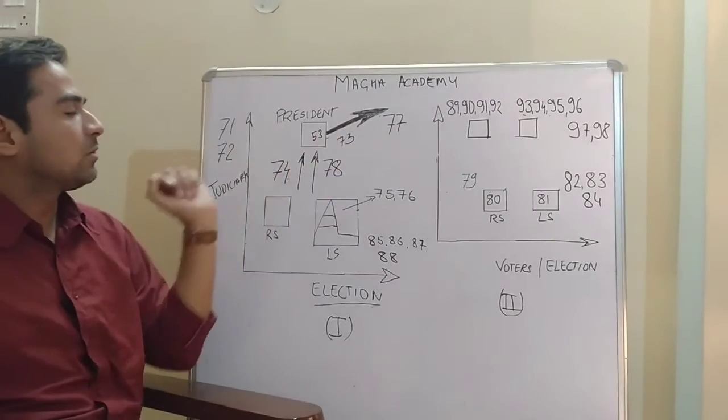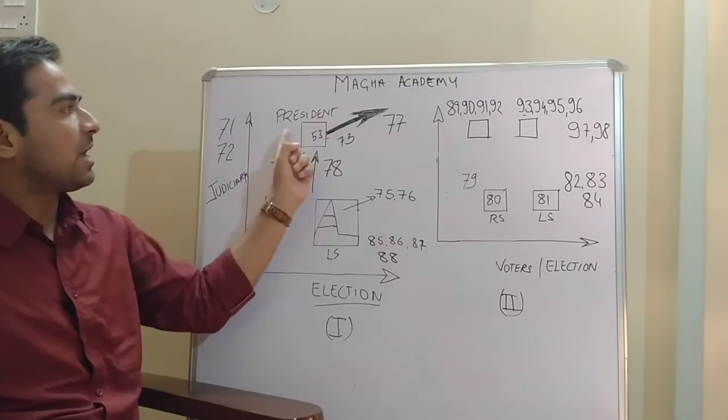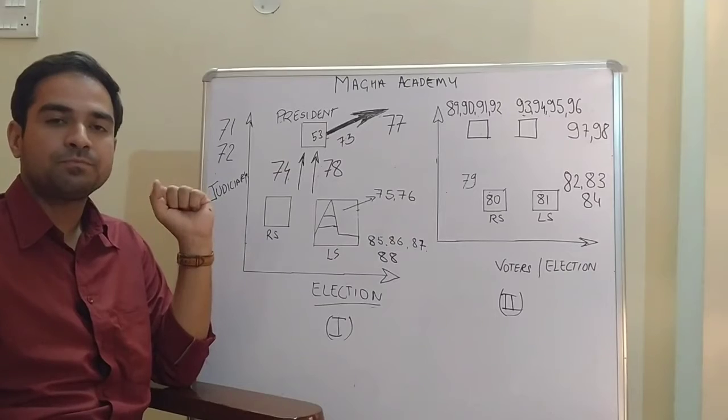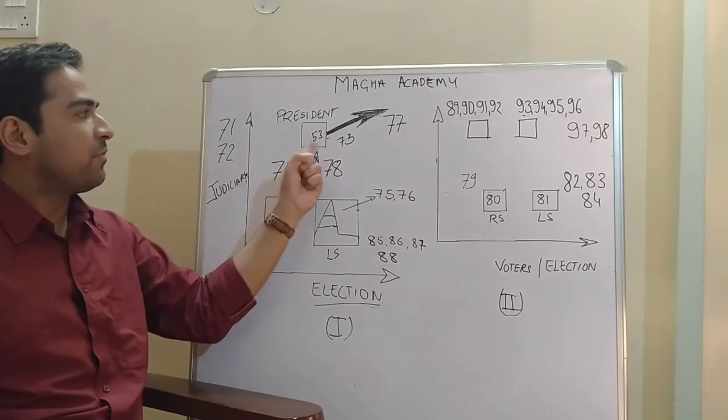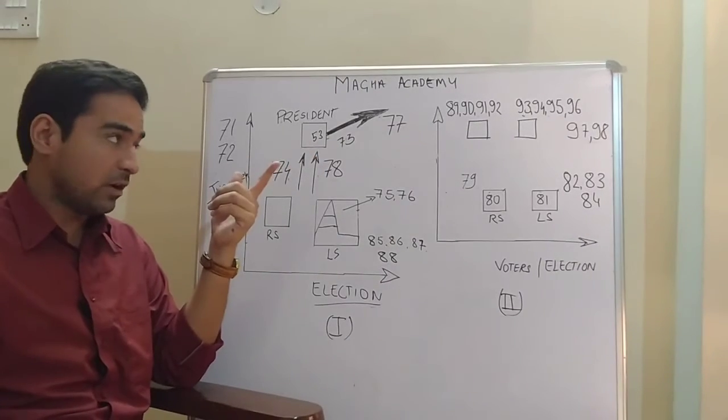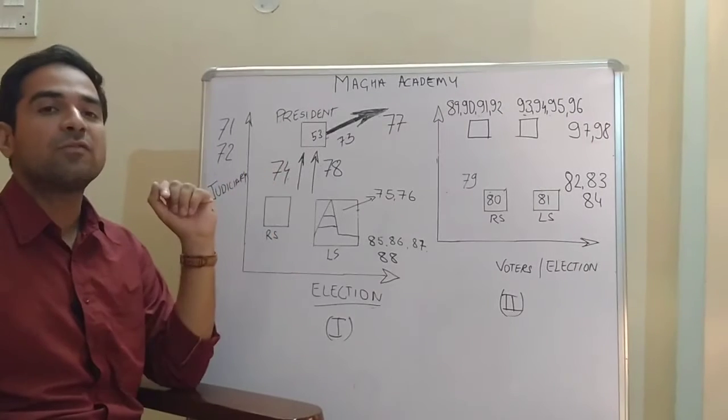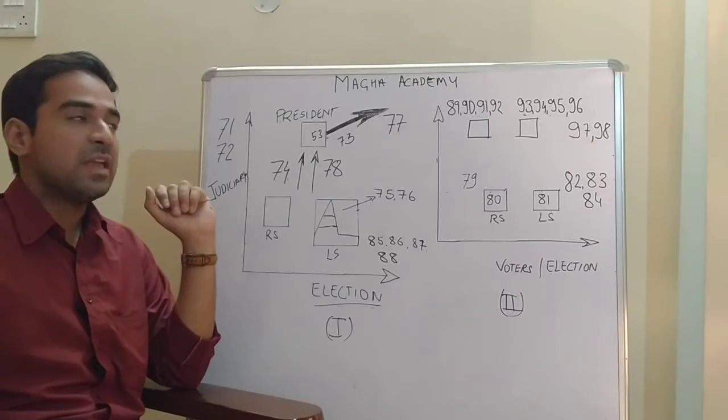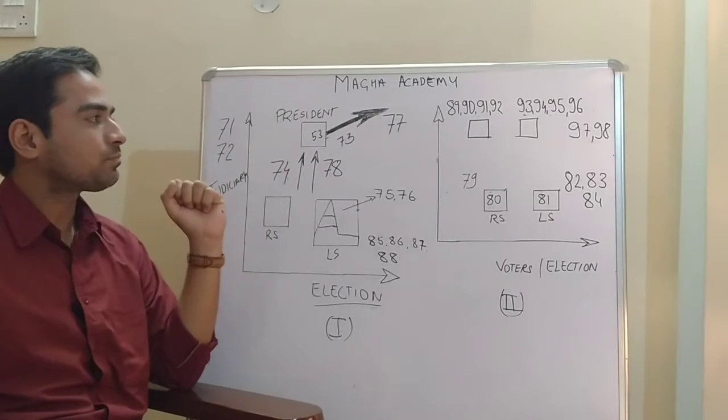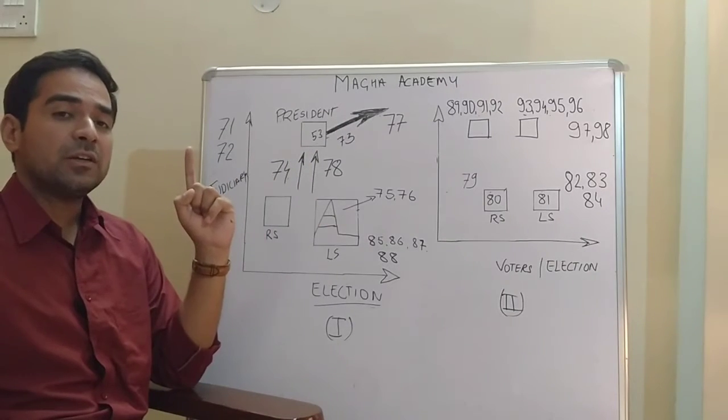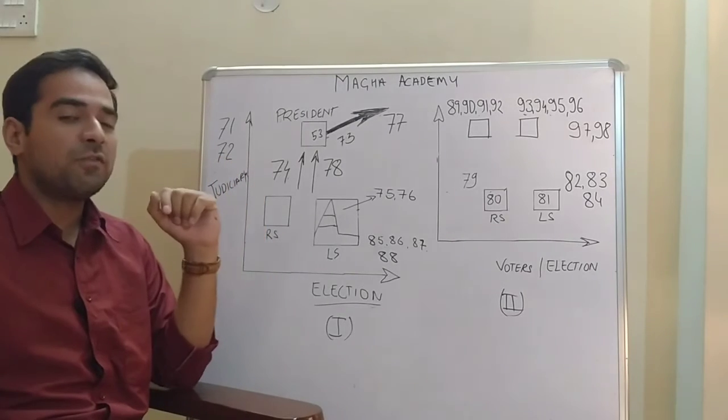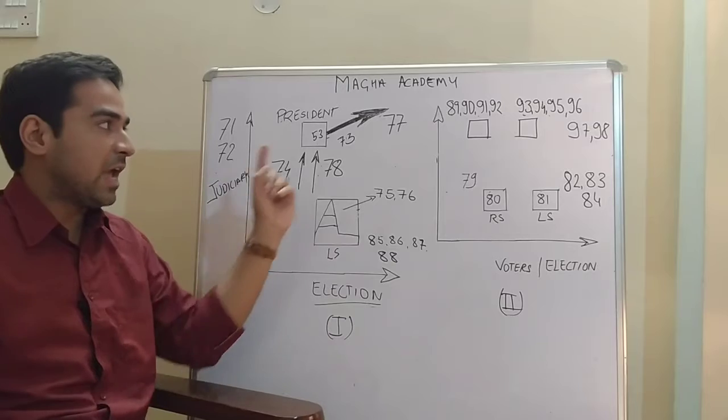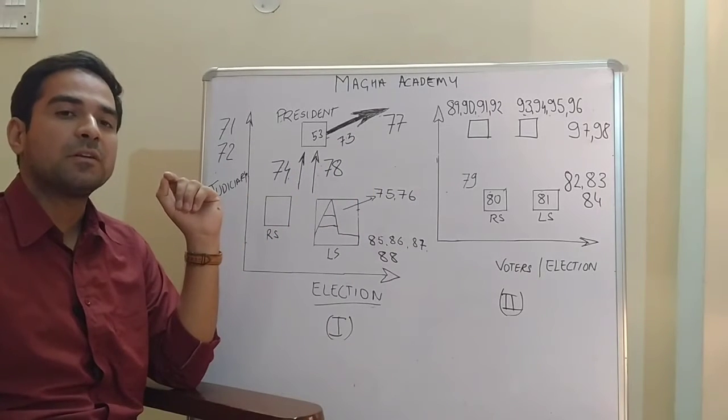Moving on to the second part - the executive. He has the executive power. In Article 53, we have already read that he is the head of the executive. The extent of the executive power extends parallel to the law-making power of the Parliament.